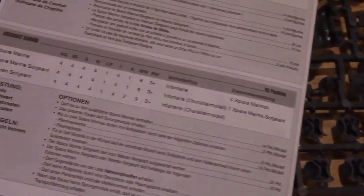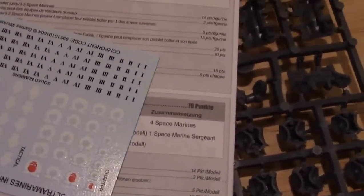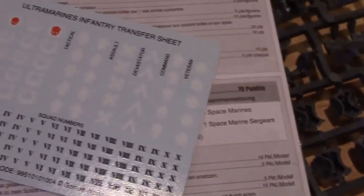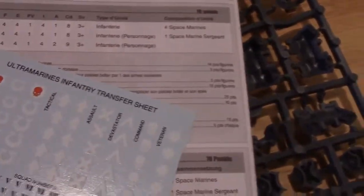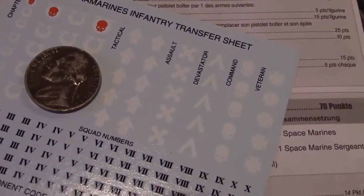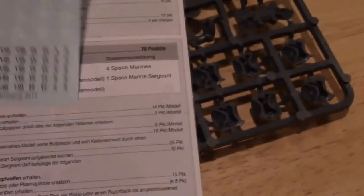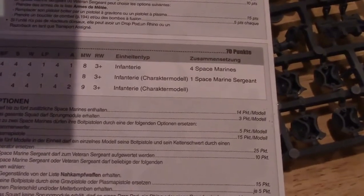There's a book here and some stickers. Those are tiny, tiny stickers. Let me put a nickel there for scale. Yeah, see, they're pretty small. So we got the Ultramarines infantry transfer sheet. What if we don't want to be Ultramarines?